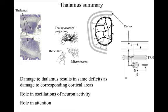Damage to a thalamic nucleus causes deficits that are pretty much the same as those caused by damage to the corresponding cortical area. The communication between the cortex and thalamic subnucleus passes through another part of the thalamus called the TRN.